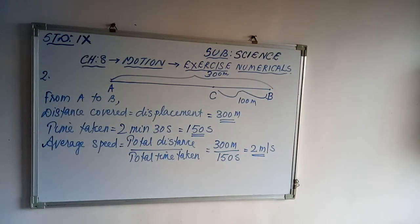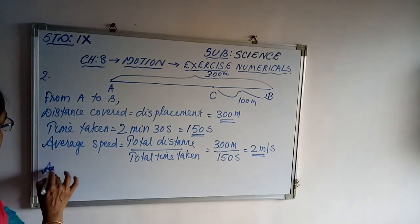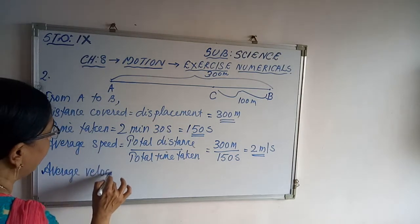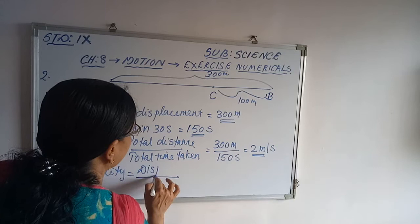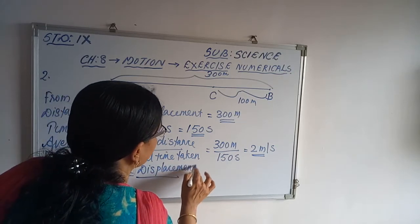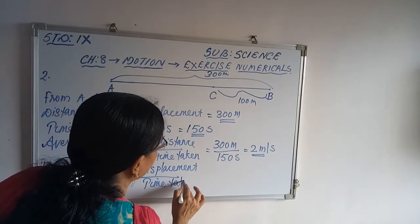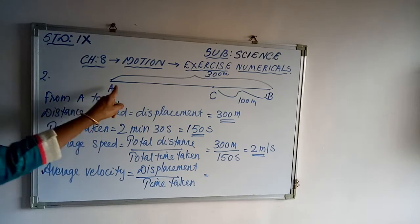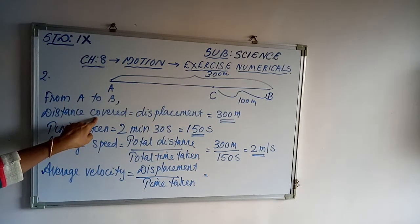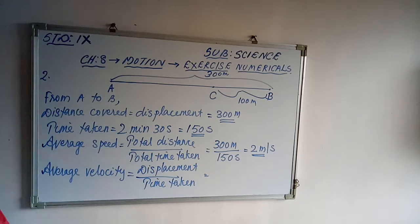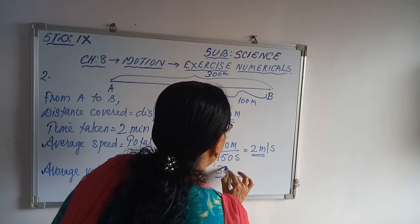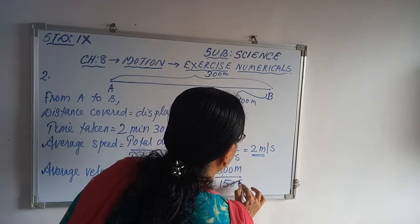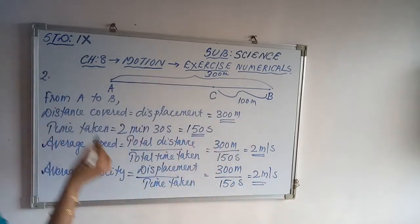Now, average velocity from A to B. Average velocity equals displacement upon time taken. From A to B, the distance covered and the displacement are the same because the direction is the same — that is 300 meters. So displacement upon time: 300 divided by 150 seconds equals 2 meters per second.